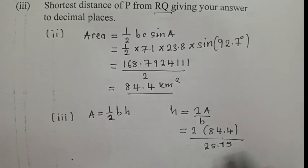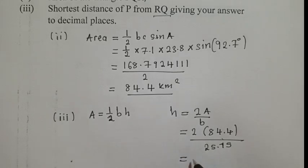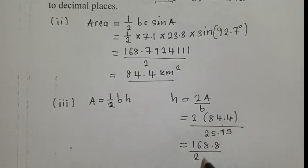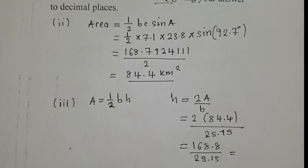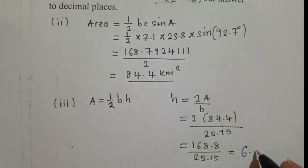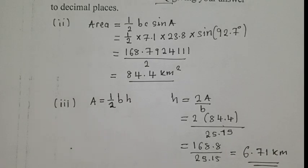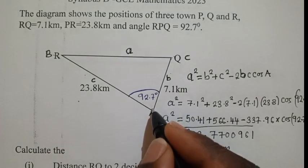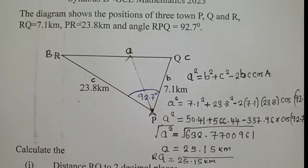So we just solve this one. When we work out on top there, it's 2 times 84.4. This, of course, is giving us 168.8. We divide by 25.15. This, of course, is giving us 6.71 kilometers. This is the shortest distance. So when we talk about the shortest distance, we're just simply talking about this distance. Like if you're at this point, because they said P, and then going to this right here. That's the shortest distance.